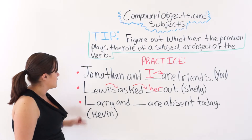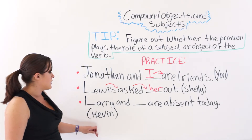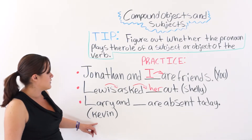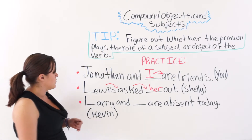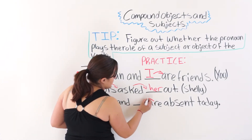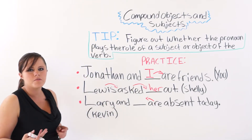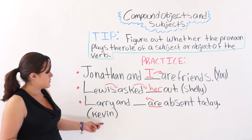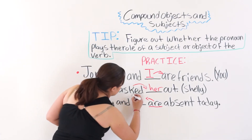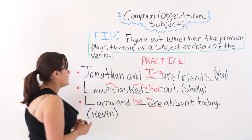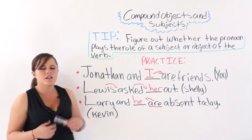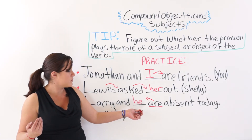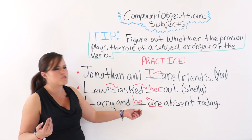The last one says 'Larry and ___ are absent today.' We are talking about Kevin, a man. We need a subject for this verb, so we use the personal pronoun for a man, which is 'he.' The answer is 'Larry and he are absent today,' not 'Larry and him,' because 'him' is the object pronoun and here it is playing the role of the subject of the verb.